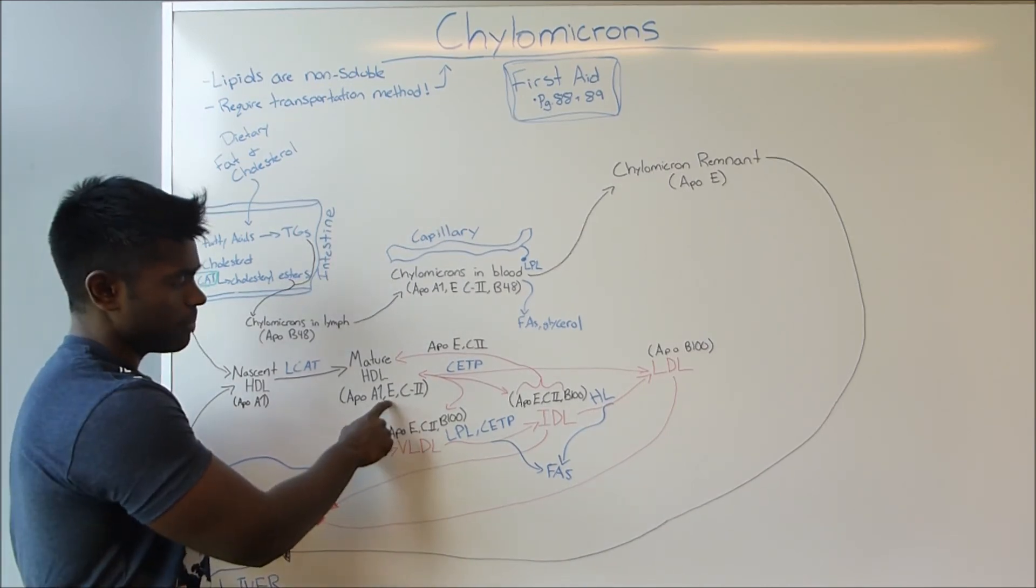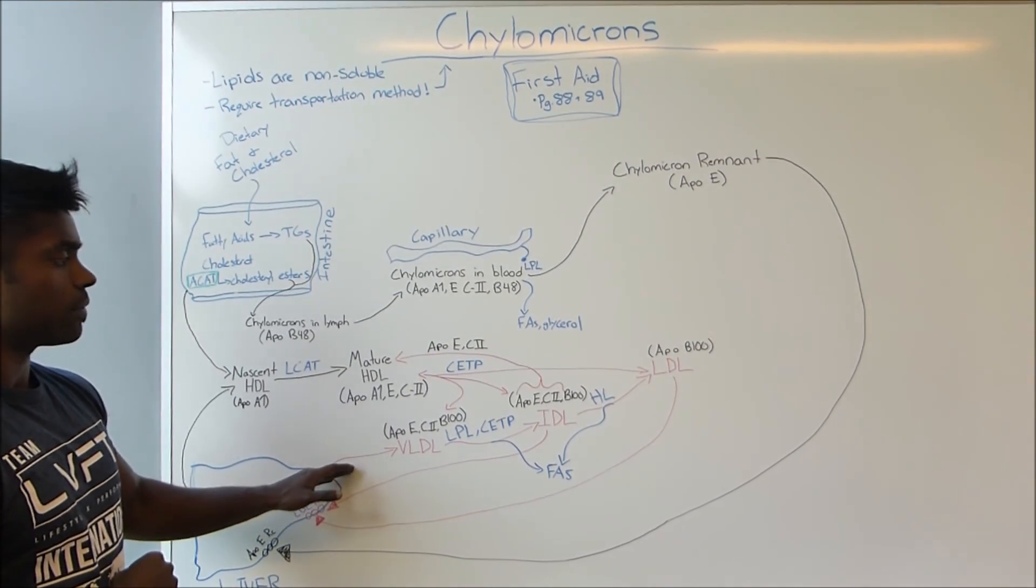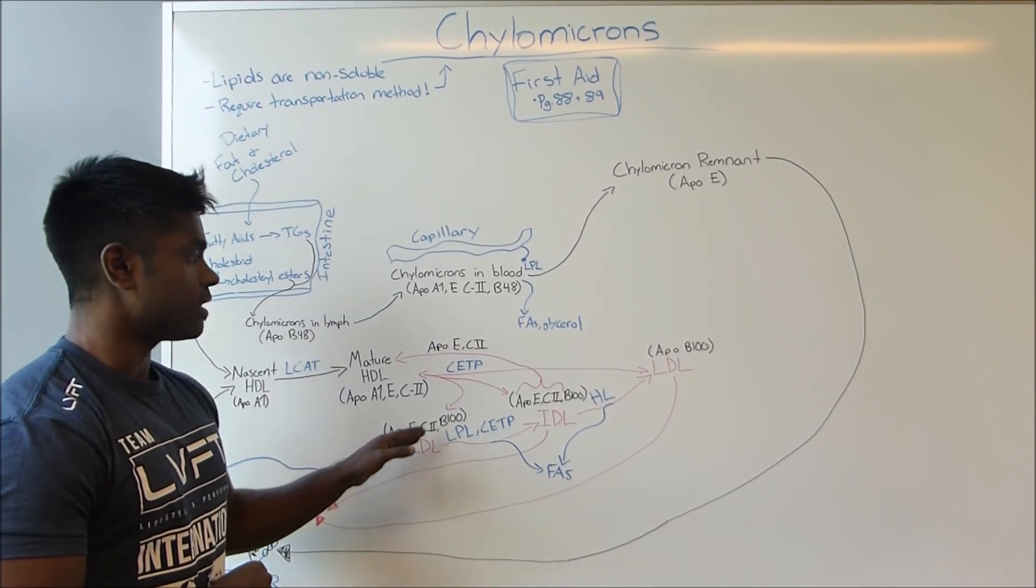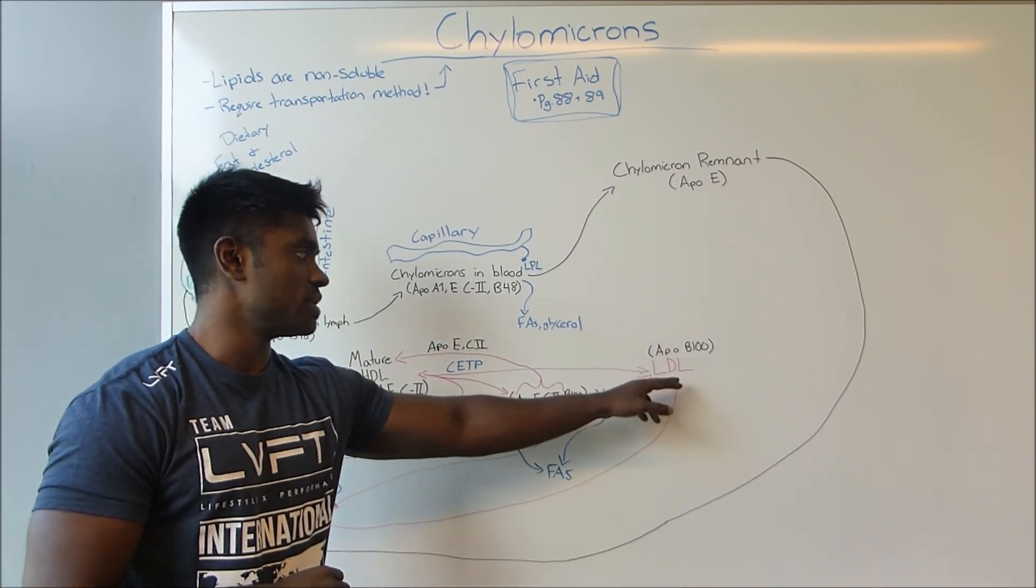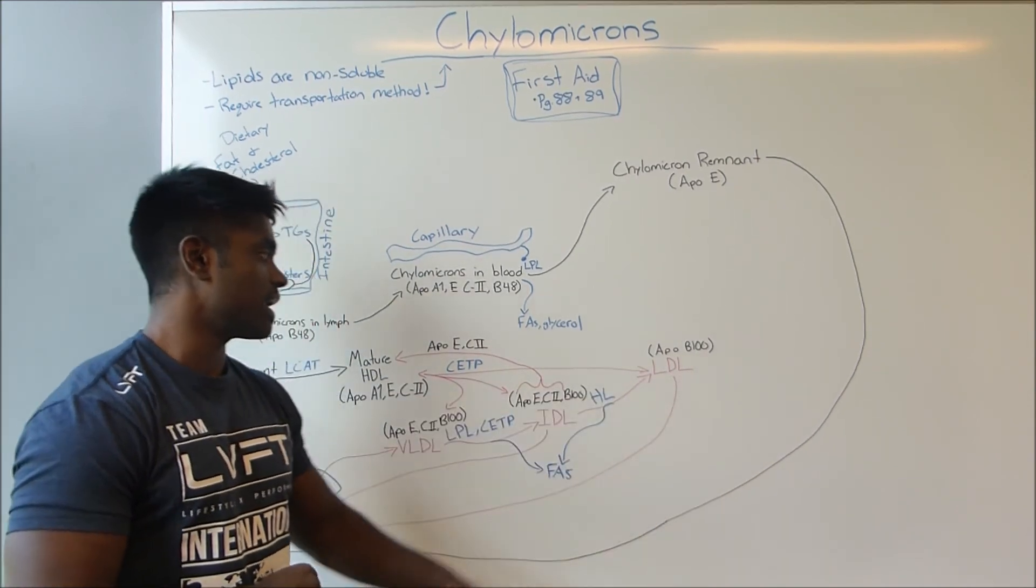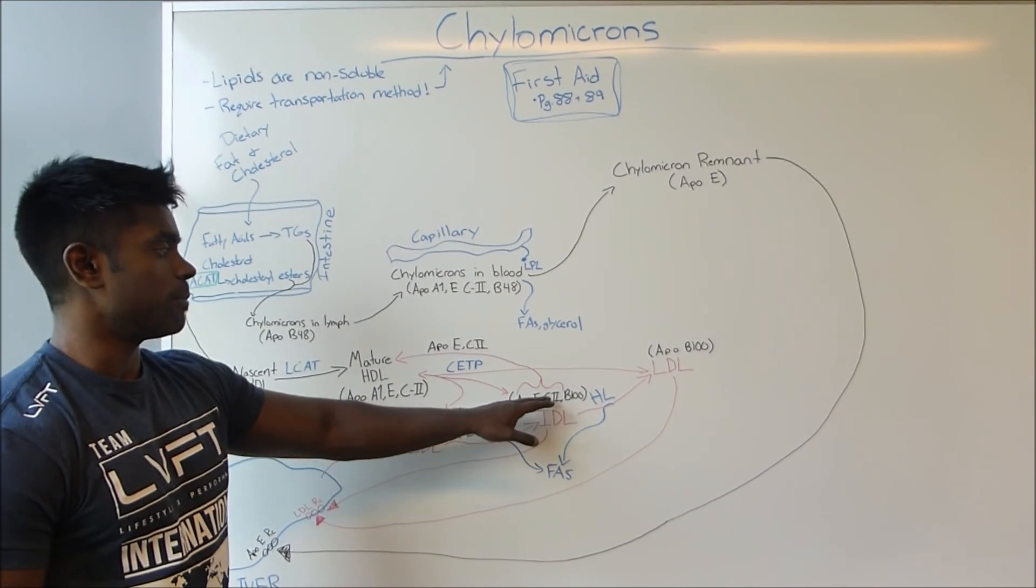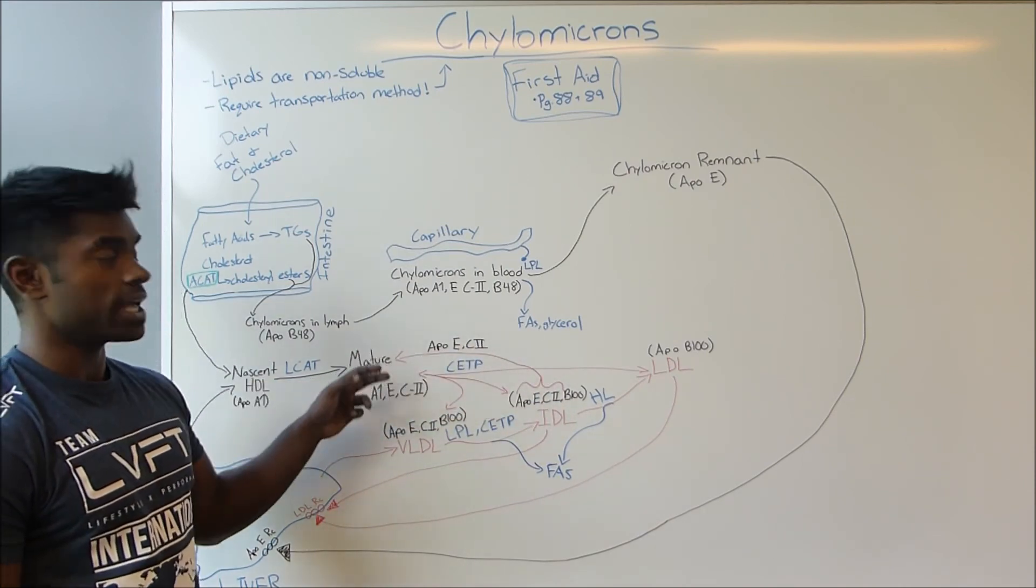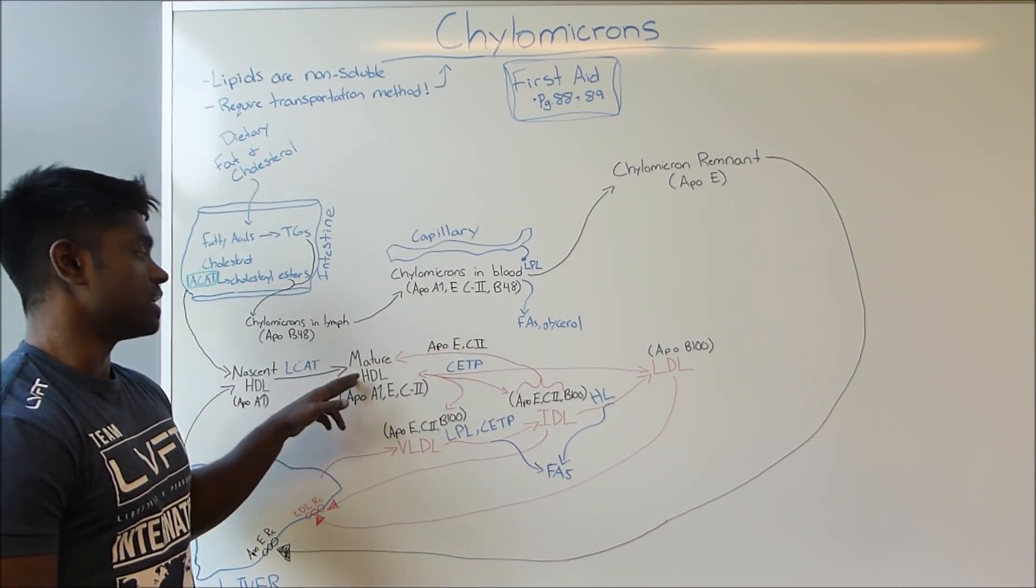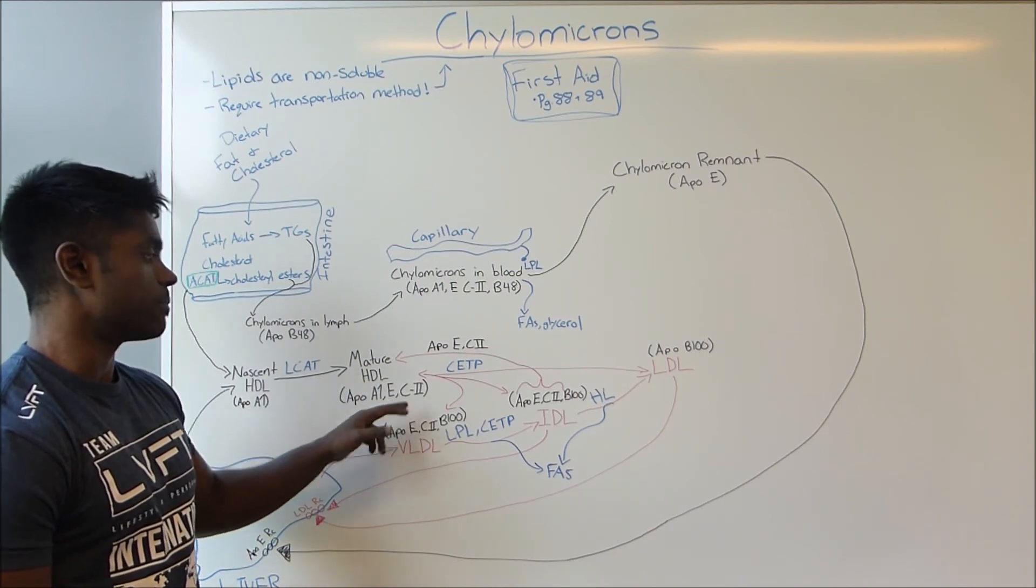If you think about where exactly did ApoE and C2 come from, let's take a look at our VLDL pathway. VLDL gets converted to IDL and then LDL, but as you can see, LDL does not have ApoE and ApoC2. Therefore we can see that ApoE and ApoC2 are returned back or recycled to the HDL because the HDL is what is the original carrier of the ApoE and ApoC2 proteins.